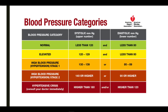Normal blood pressure is defined as 120 over 80 or less. Either high systolic or diastolic blood pressure can be problematic. There are various stages of high blood pressure depending upon how high each number is. Proper diagnosis of high blood pressure will use an average based on two or more readings obtained on two or more occasions.